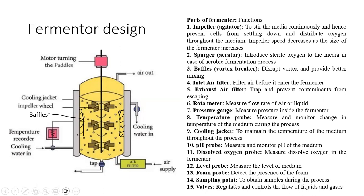Then we have a sampling point, which allows you to intermittently remove a small amount of sample to analyze the fermentation reaction at any stage. It is a small tube through which you can carefully remove the sample in a sterile way. There are also different valves that can be regulated for liquids or gases — for example, if the pH increases or decreases, acids or bases can be added through these valves.